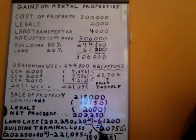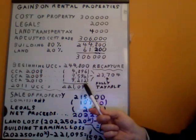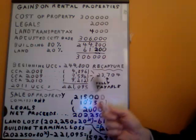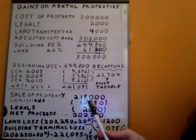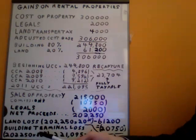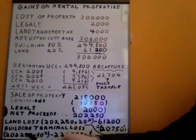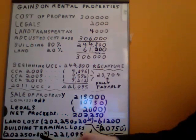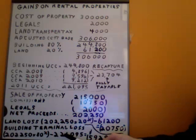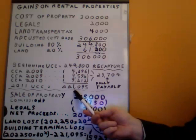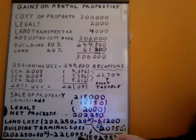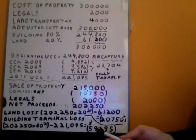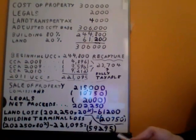For the building portion, we're going to end up with something called a terminal loss, because we've taken depreciation on the building portion of our rental property and it's the only asset in our class. Once it's disposed of, we can take a terminal loss. We calculate that as $202,250 times 80%, less our ending UCC of $221,095, giving a terminal loss of $59,295.